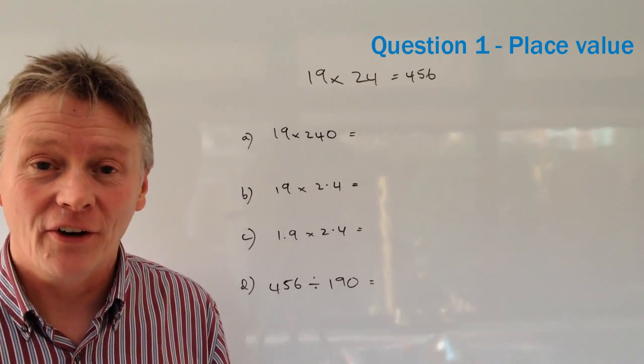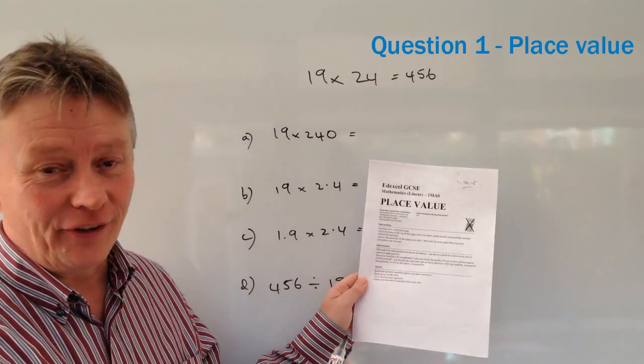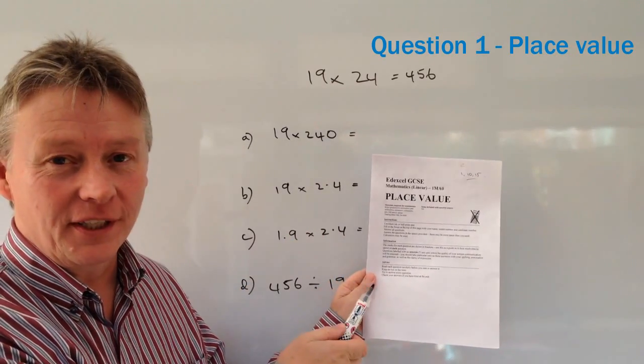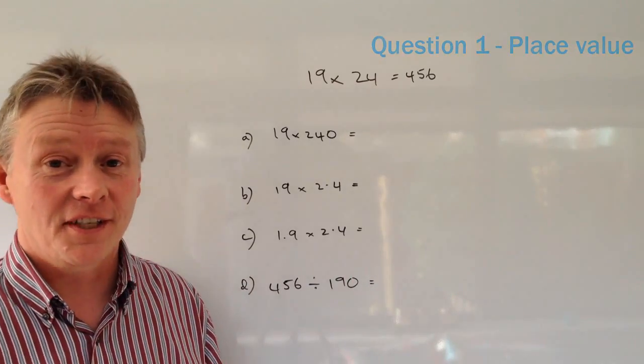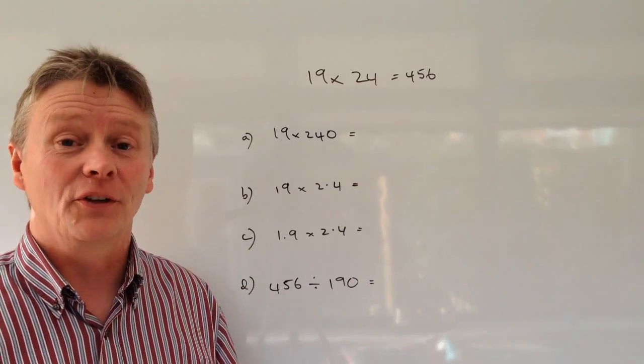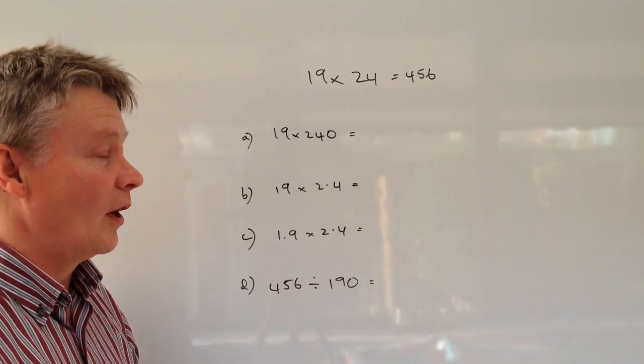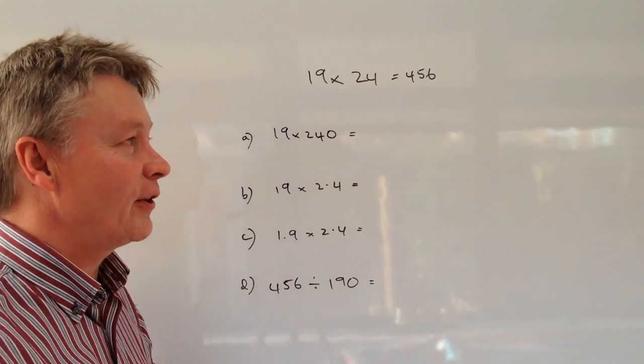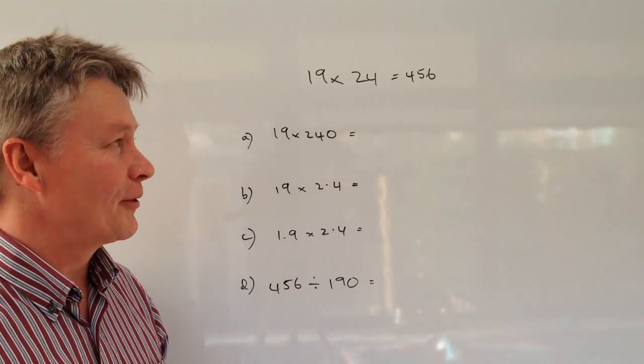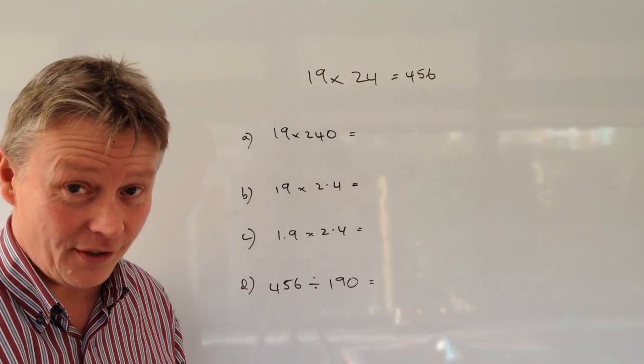Hi, in this video I'm going to be addressing questions 1, 10, and 15 from this question paper that you can go to the website and download. If you click on the link below in the description. This is question 1 and it gives us a statement: 19 times 24 equals 456, and it asks us to write down the answers to these four questions.